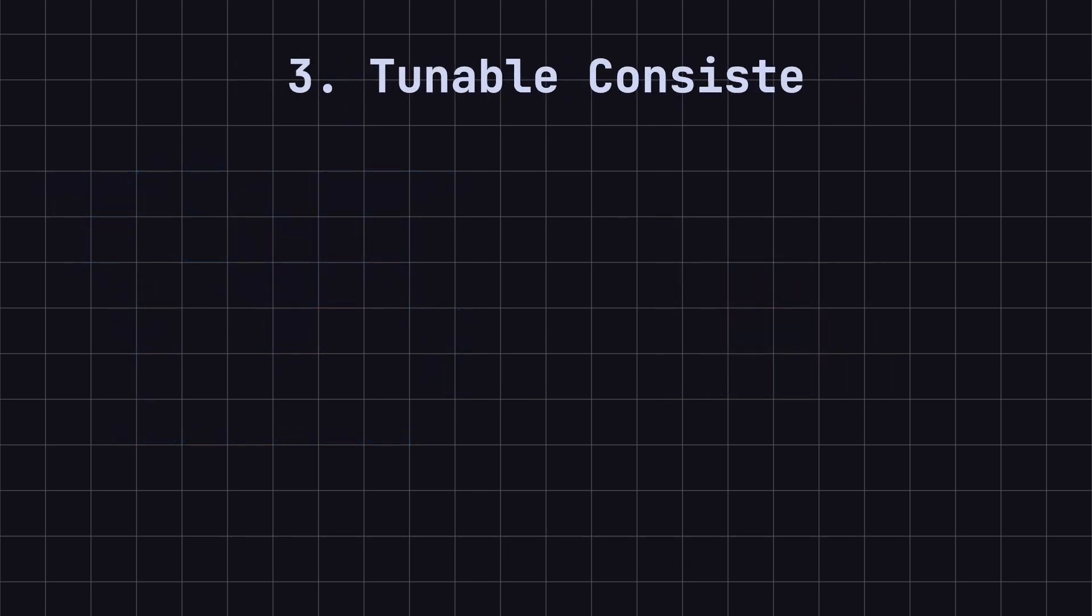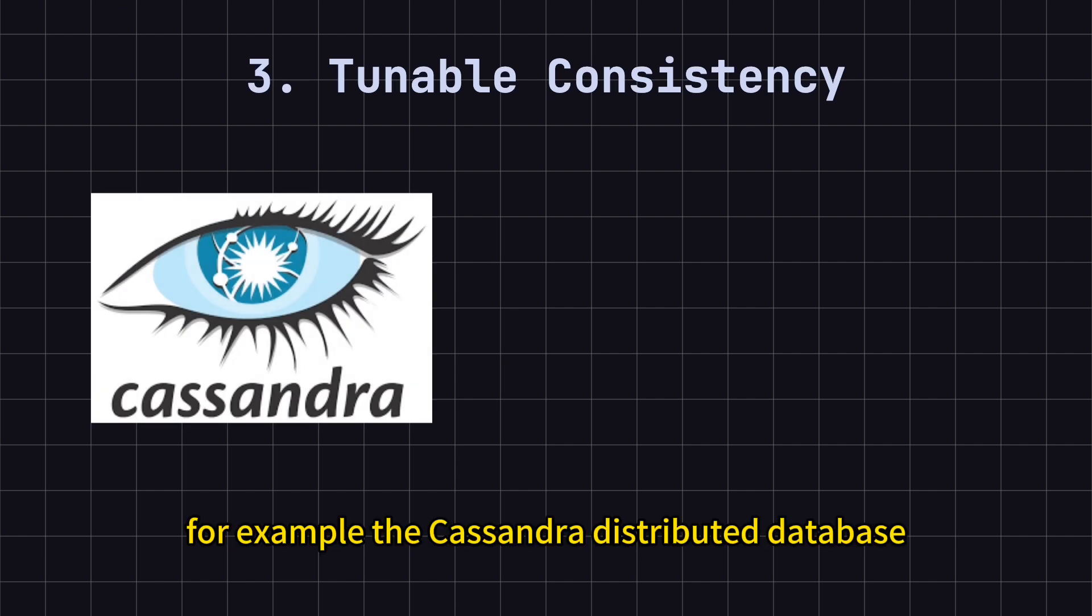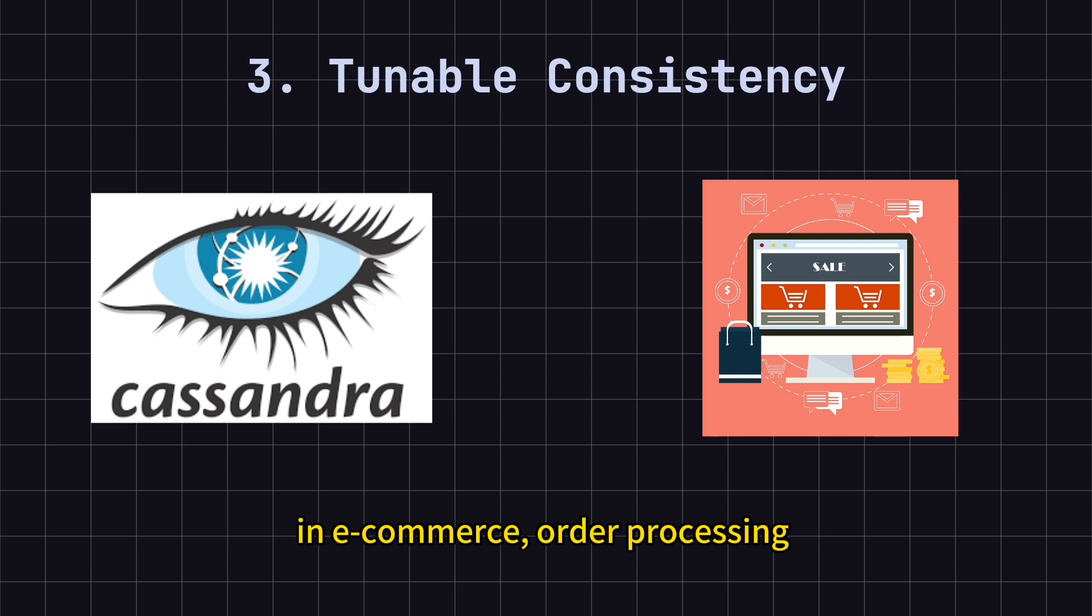Third, Tunable Consistency. Some systems let users configure and balance between strong and eventual consistency. For example, the Cassandra distributed database allows fine-grained control over data consistency through configuration. In e-commerce, order processing often requires strong consistency, while product recommendations or comment systems might only need eventual consistency. Databases supporting tunable consistency are worth considering for these scenarios.